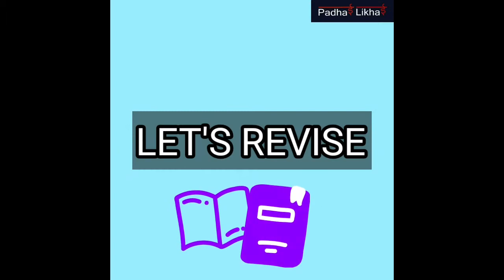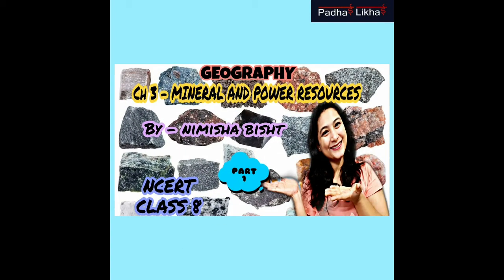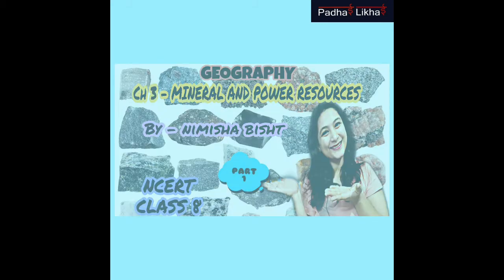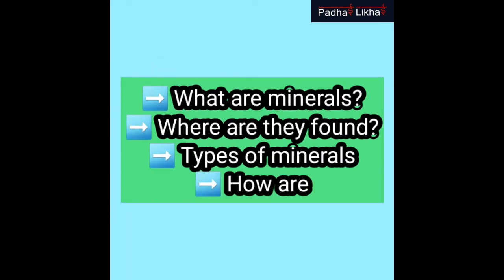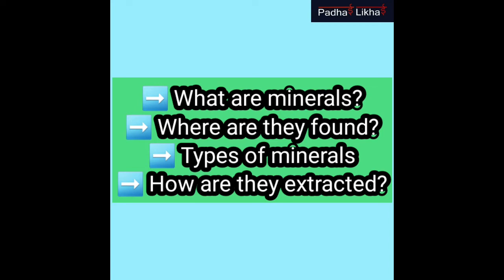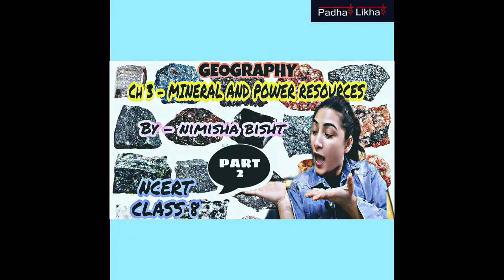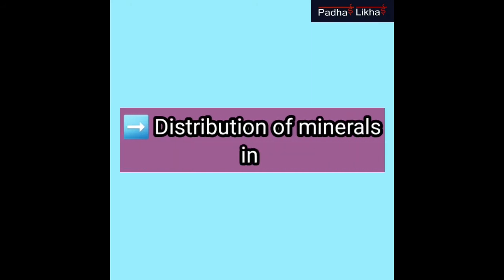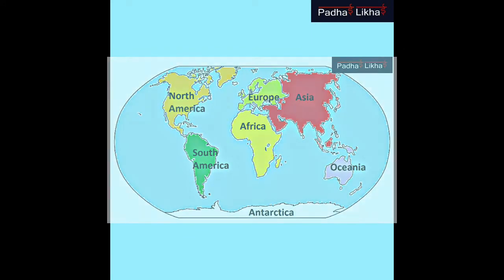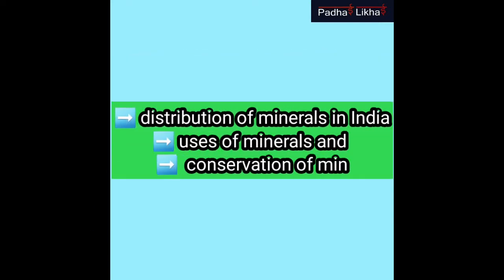First of all, let's revise what we have studied in the previous 1st, 2nd and 3rd parts. In the 1st part, we studied about what are minerals, where they are found, types of minerals and how they are extracted. In the 2nd part, we studied about distribution of minerals in the entire world, covering the 7 continents. In the 3rd part, we studied distribution of minerals in India, uses of minerals and conservation of minerals.